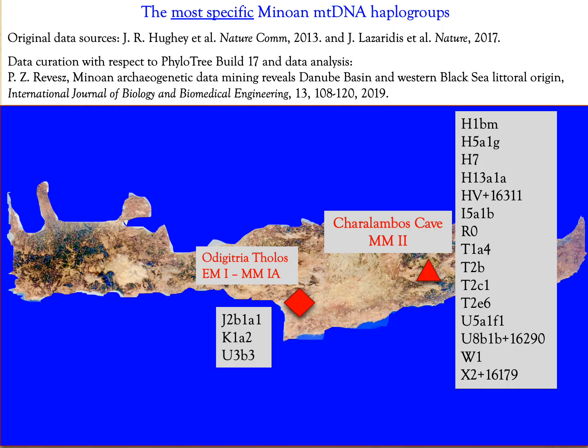Ancient Minoan mitochondrial DNA data was published in two studies so far: the first by Huey et al., and the second by Lazaridis et al. in a Nature paper in 2017. The Phylo3 organization published a new mtDNA classification tree in 2016, and some of the haplogroup classifications had to be updated. This update and the analysis described in this video can be found in our journal paper from 2019.